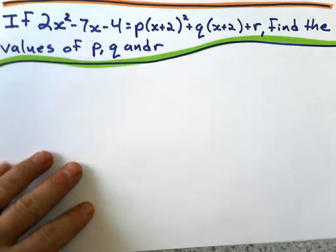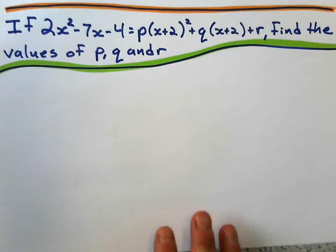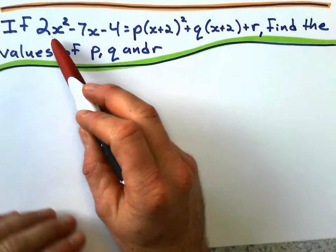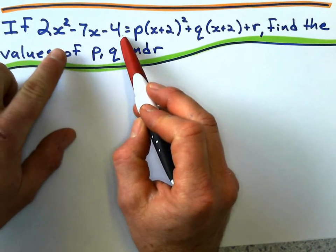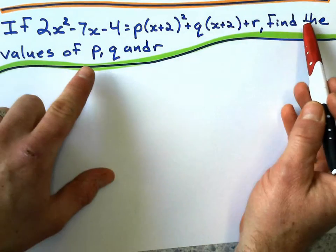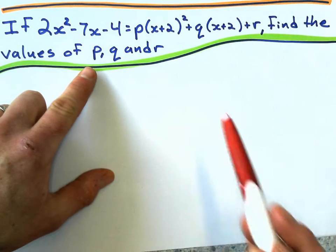Here it is, and we've got quite an interesting equation there. So if 2x squared minus 7x minus 4 equals this expression here, we want to find the values of P, Q, and R.